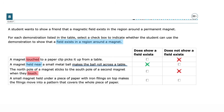A small magnet held under a piece of paper with iron filings on top makes the filings move into a pattern that covers the whole paper. The magnet affects the iron filings through the paper, clearly showing the invisible magnetic field's shape and presence.